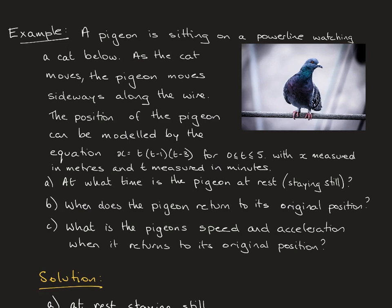Let's look at a question. A pigeon sitting on a power line moves sideways along the wire to the left and right as a cat moves below. The pigeon's position is modeled by an equation where X is measured in meters and T is measured in minutes. The three questions are: at what time is the pigeon at rest, when does the pigeon return to its original position, and what is the pigeon's speed and acceleration when it returns to its original position?